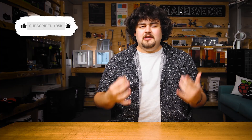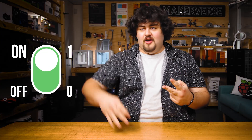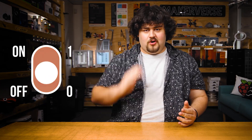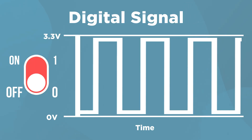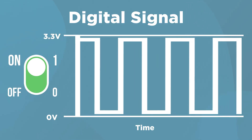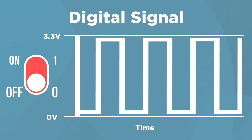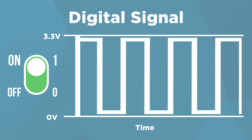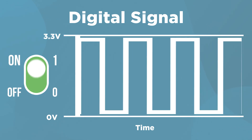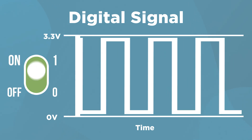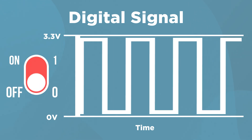Starting off, digital signals can only be two possible states: either on or off. When we use the pins of our Pico to output a digital signal, it's kind of like a regular light switch — you can either turn power on or off, no in-between.